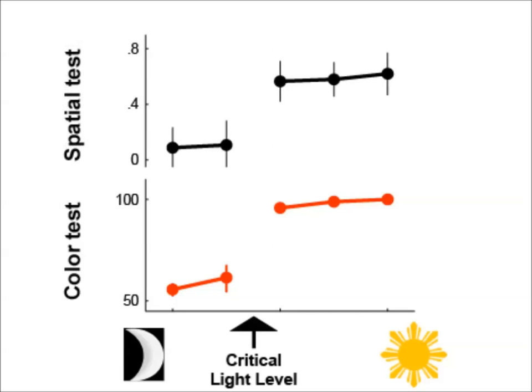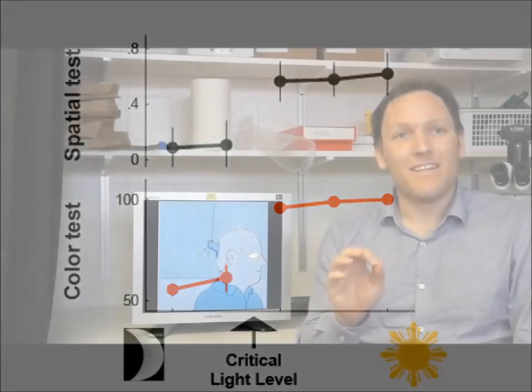At a critical light level, one particular aspect of spatial vision changed sharply. The critical light intensity in which this occurred was the same at that where the subject could reliably discriminate color. Therefore, similar to switching on of inhibition in mice, a stepwise change was observed in the spatial visual properties of human perception, that corresponded to the light level at which cones are activated. This suggests that the switch circuitry we describe in the mouse may be conserved in human vision.